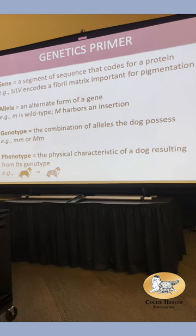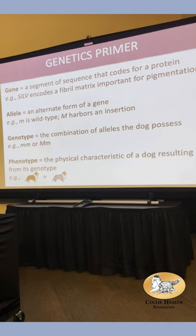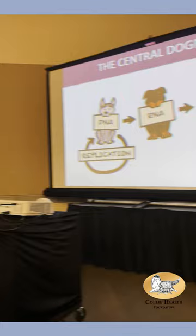Finally, we have phenotype, which is the physical characteristic that results from whatever genotype we have. So a little m/little m dog is a tricolor solid, while a big M/little m dog is a merle.